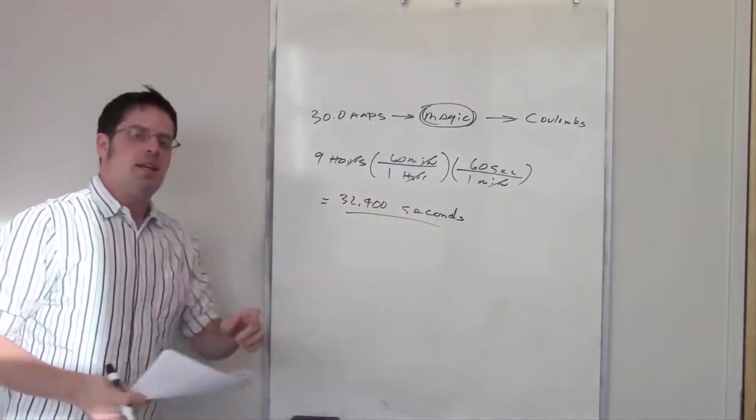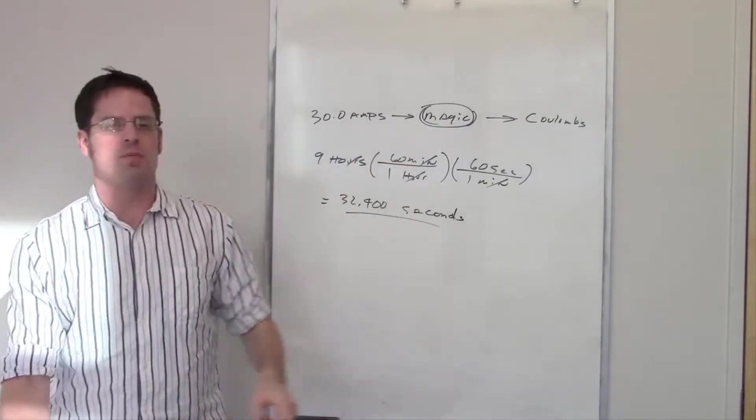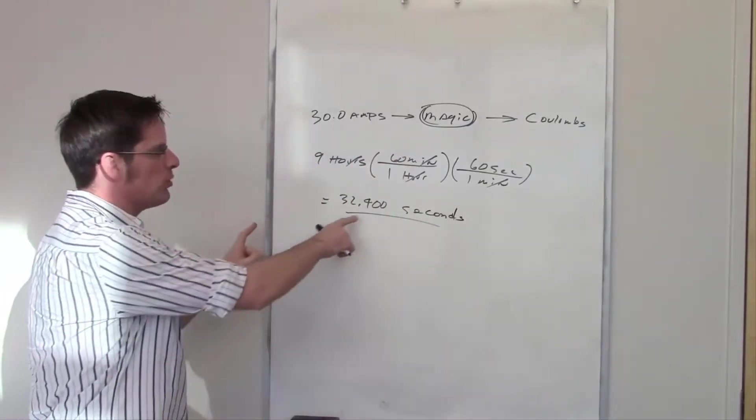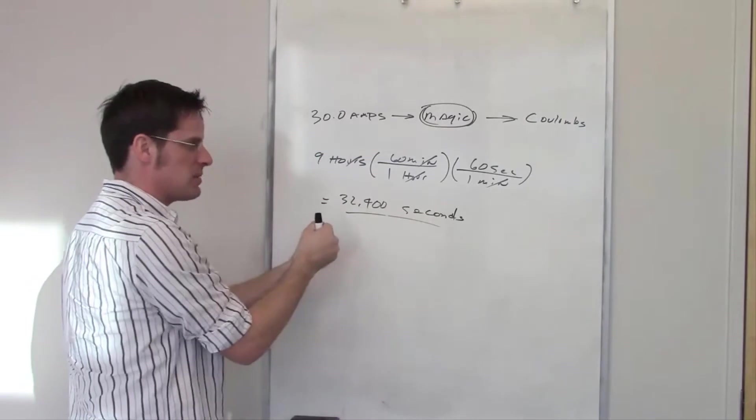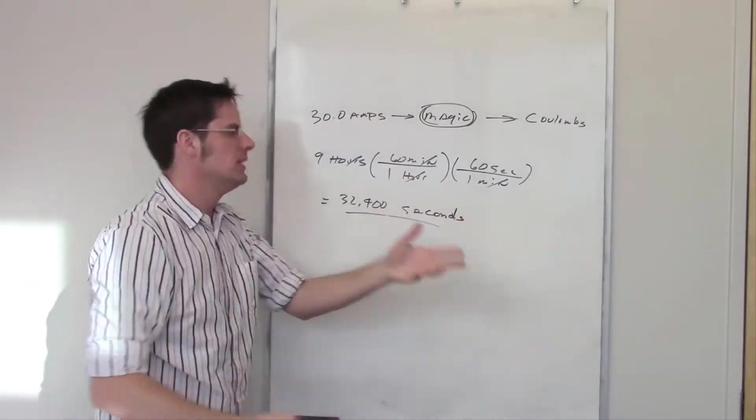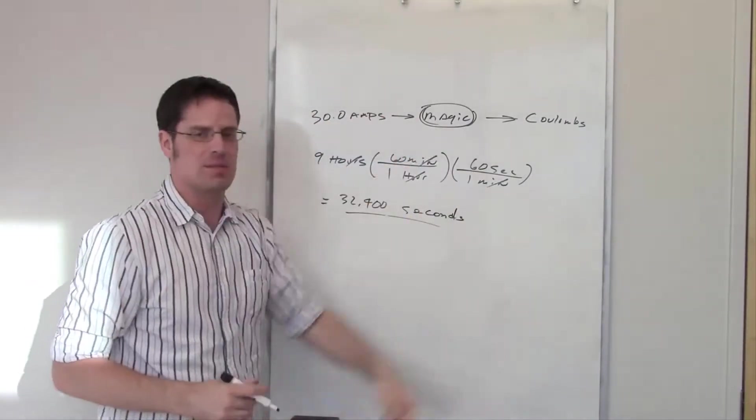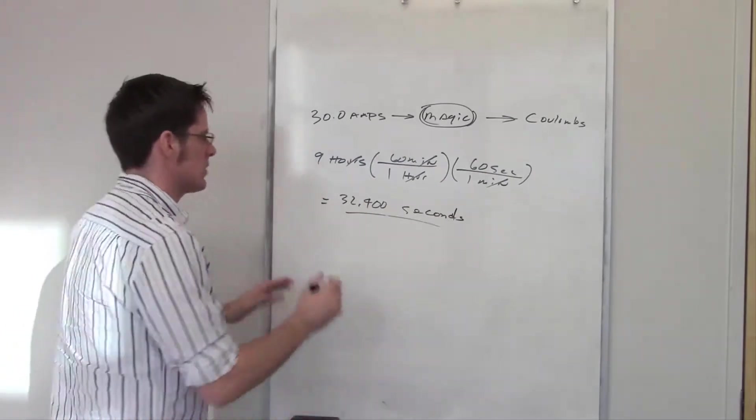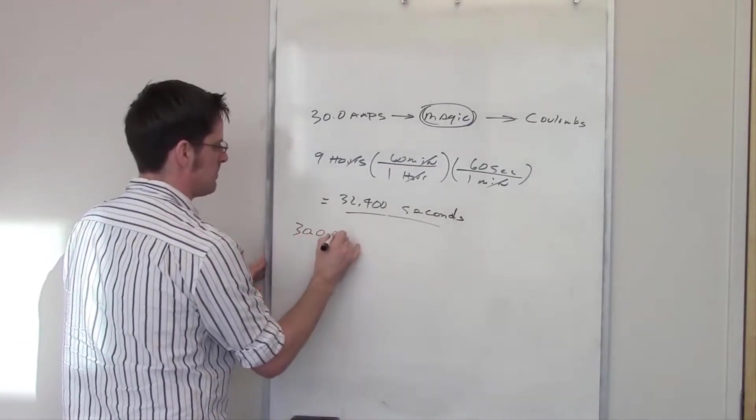That's a lot of seconds. Anyway, to convert amps into coulombs, you just take the number of amps and multiply it by the number of seconds. If I take this and this and just times them together, voilà, I've thrown everything in the magic box and it comes out the other side as coulombs.